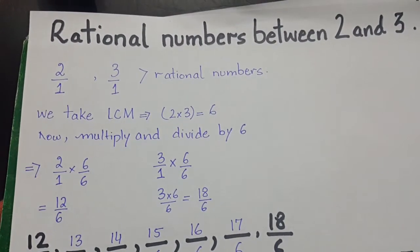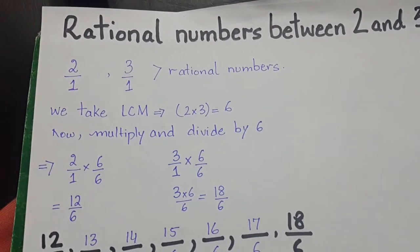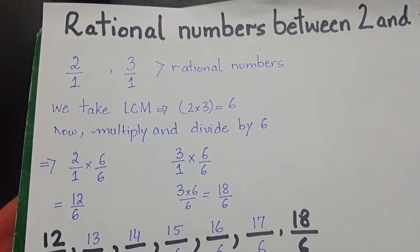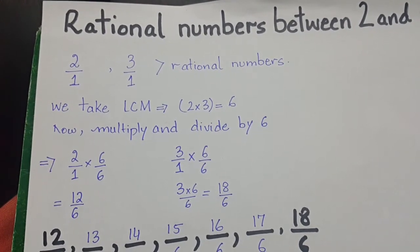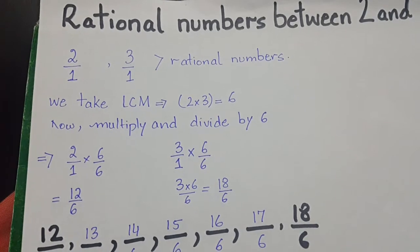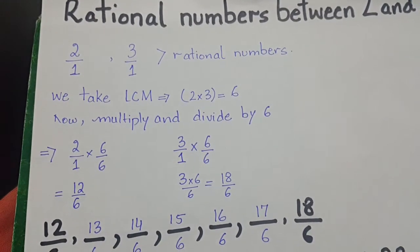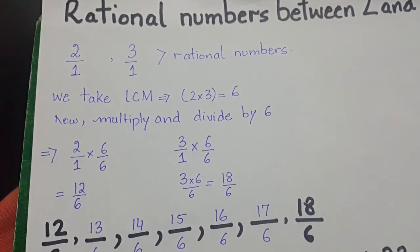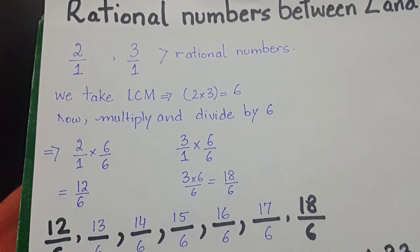To find rational numbers between 2 and 3, we express them as 2 divided by 1 and 3 divided by 1. This gives us 2/1 and 3/1 as rational numbers. Now we will take LCM: 2 multiplied by 3 is 6. Now we will multiply and divide by 6.